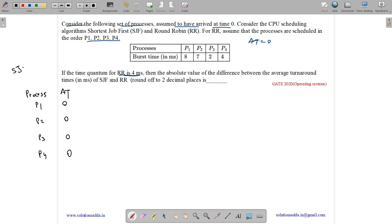First of all, let us do for shortest job first. In this, the shortest job is scheduled first at a given point of time. Their burst times are 8, 7, 2 and 4. Now let us draw the Gantt chart for this.